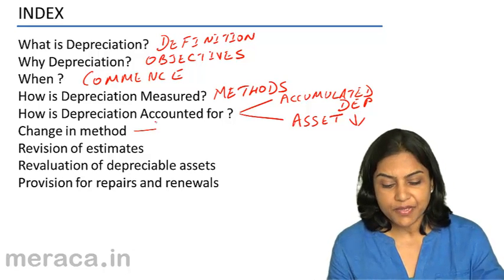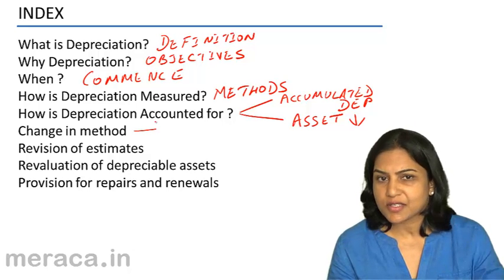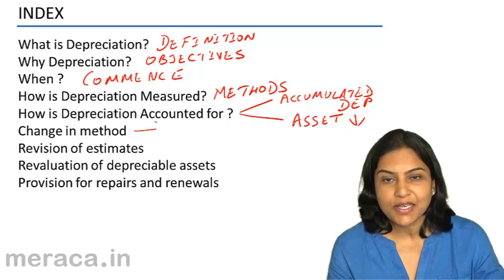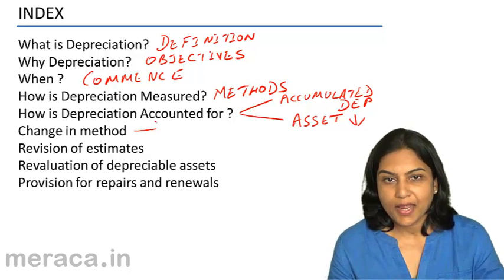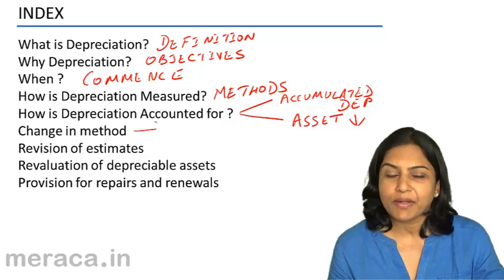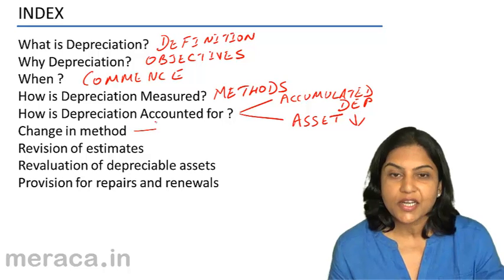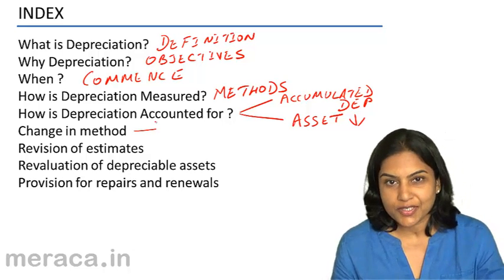Revision of estimates: depreciation involves certain estimates like the life of an asset. We may think we will use our machinery for five years, it is quite possible that we use the machinery for seven years, or it is quite possible that we are able to use it for only four years.